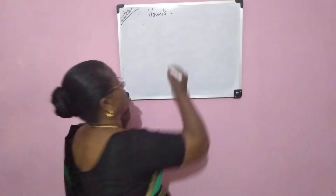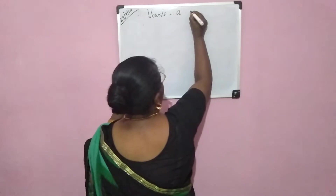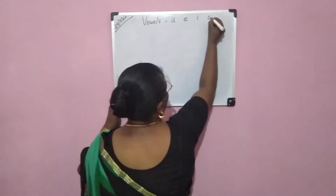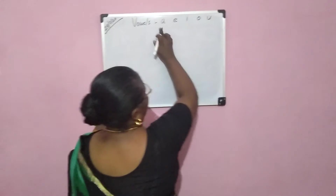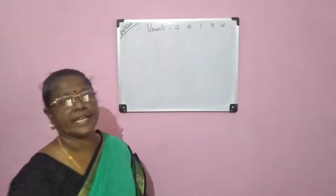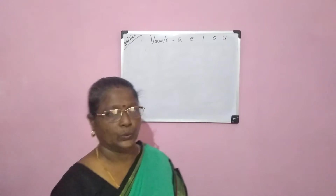The 5 vowels are: A, E, I, O, U. Say the 5 vowels: A, E, I, O, U.